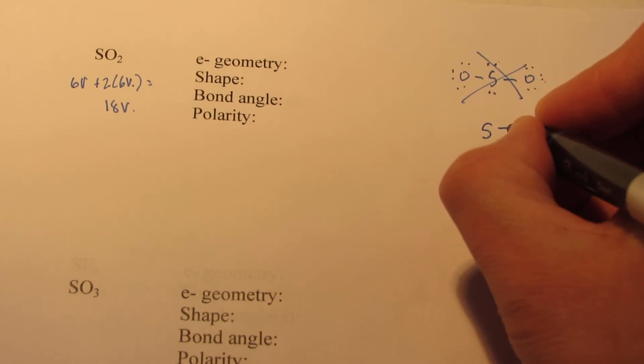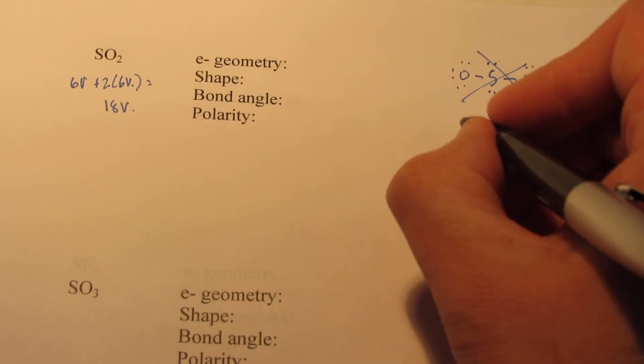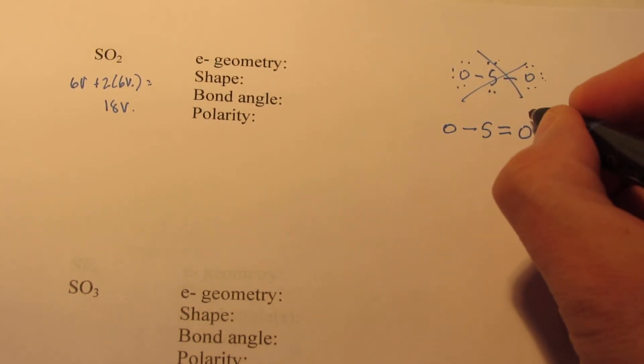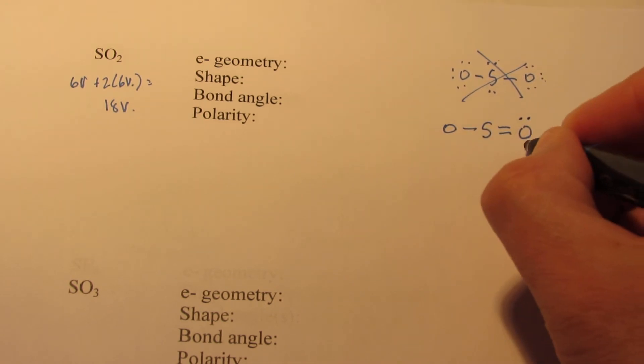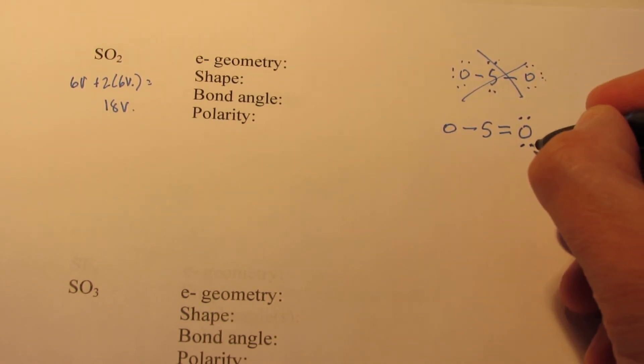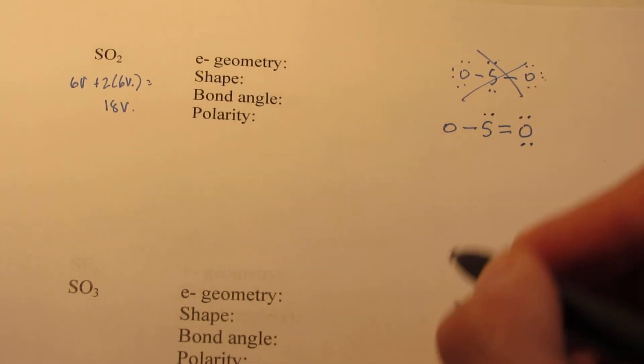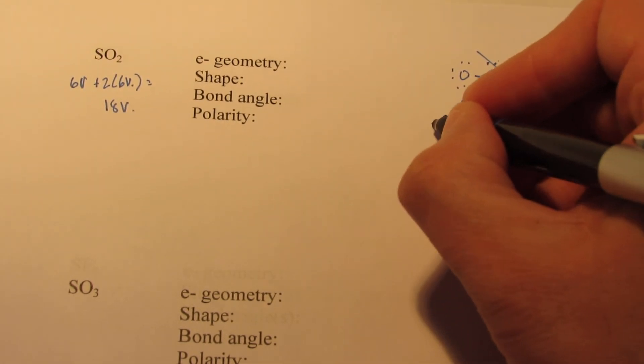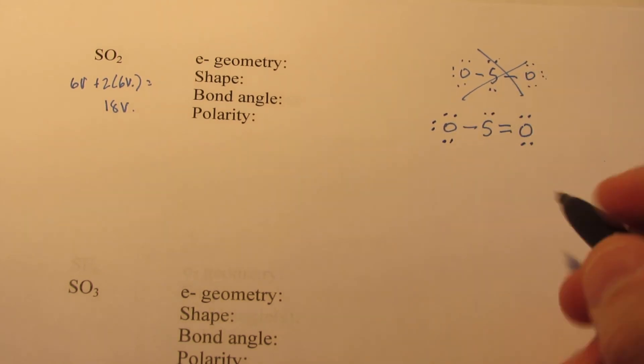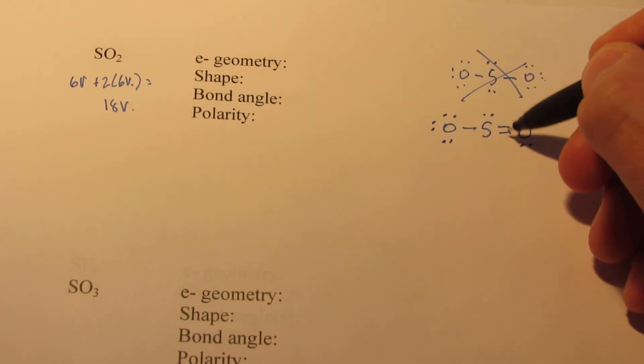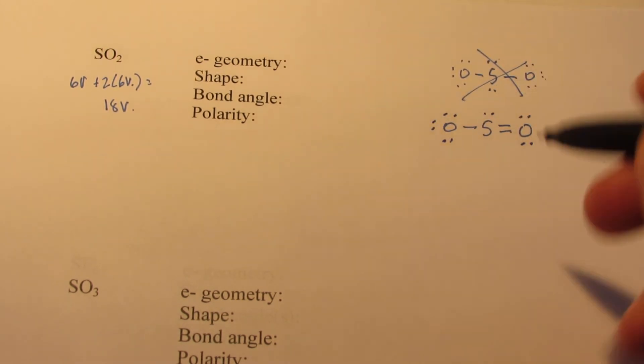Well, let's try a double bond on one side and a single on the other. And this oxygen only would need two more pairs to complete its octet. The sulfur needs one more pair, and this oxygen needs three more pairs. 2, 4, 6, 8, 10, 12, 14, 16, 18. Perfect.